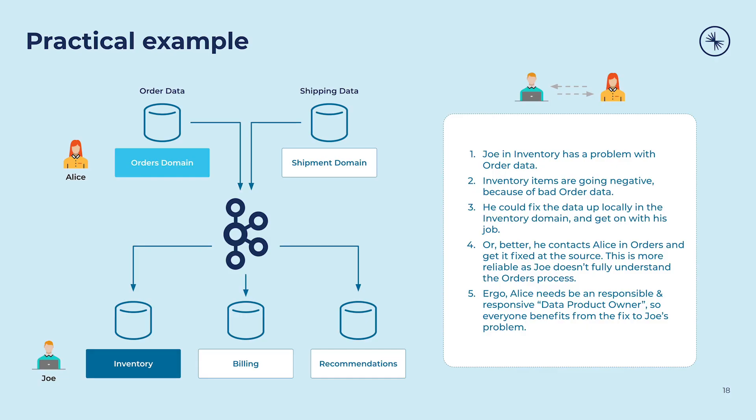Here's a practical example. Imagine Alice is working on the orders domain at the top, and Joe is down in inventory management at the bottom. Joe gets some bad order data from Alice. His first option is to try and fix that data locally for himself. But doing that just fixes the data for him. He's also coupling his inventory product to his local fixes, which are themselves brittle. They have a risk of breaking if Alice decides to fix the problem at the source, and his own fix might be brittle with respect to hers.